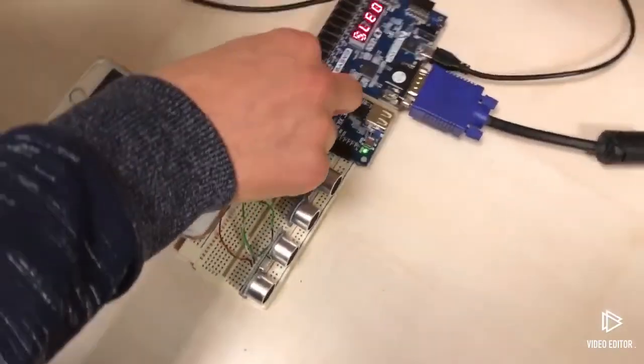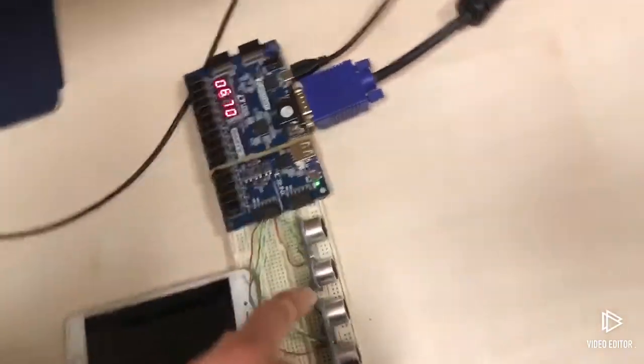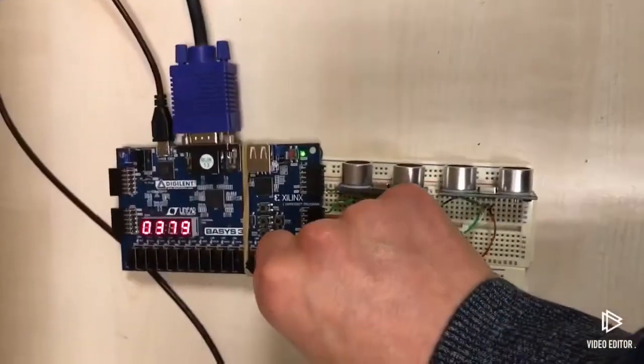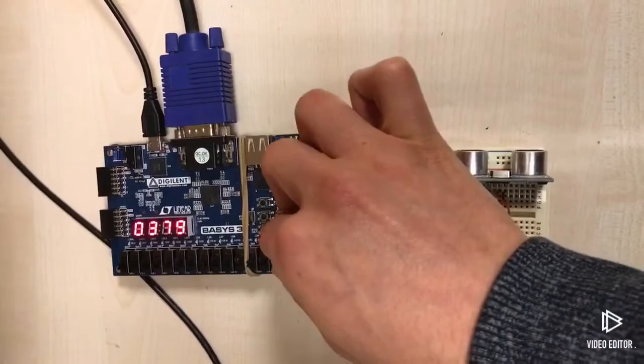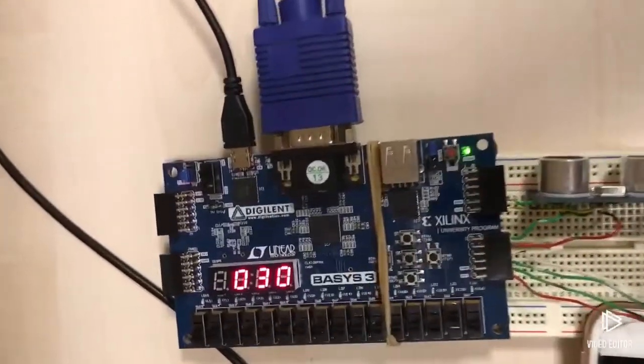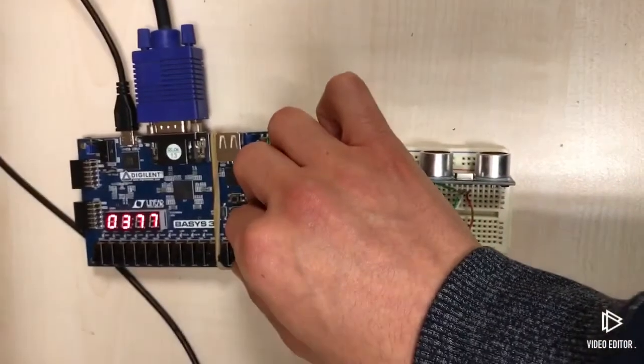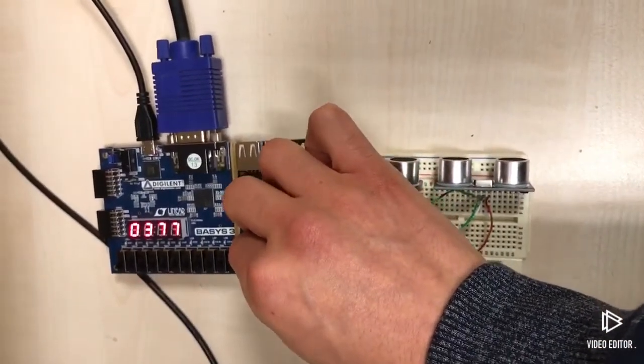If we turn this switch on, we can see that it shows the first ultrasonic sensor. And when we switch this on, it shows the angle of it. And this displays the average.